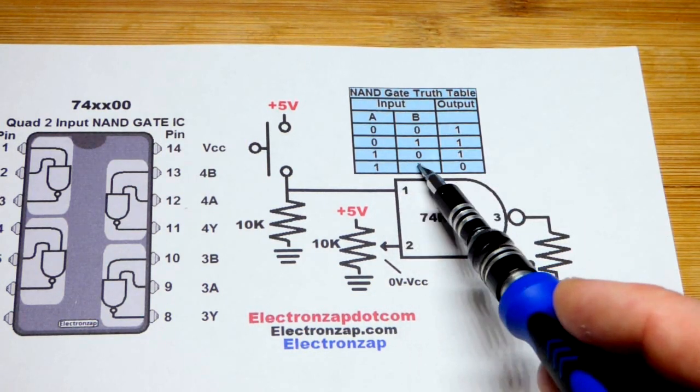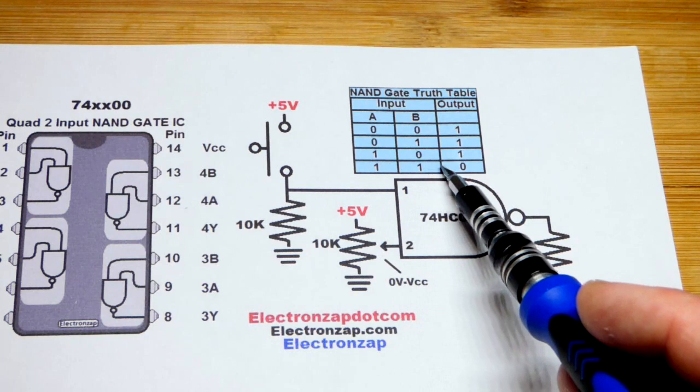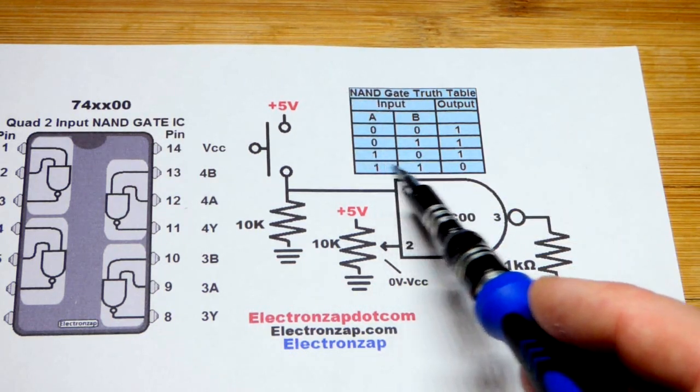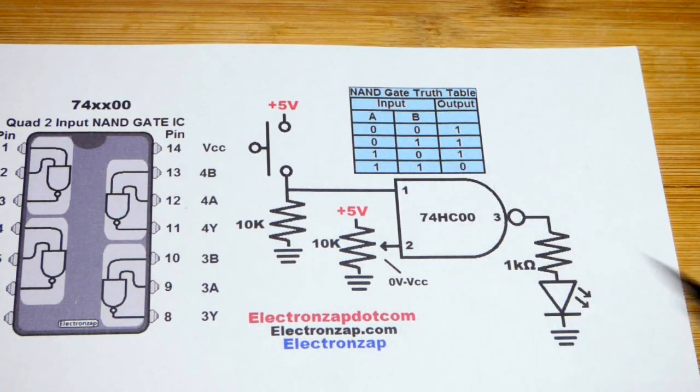If both inputs are high, with the AND gate, the output's high, but with the NAND gate, not AND gate, if both inputs are high, then the output is low.